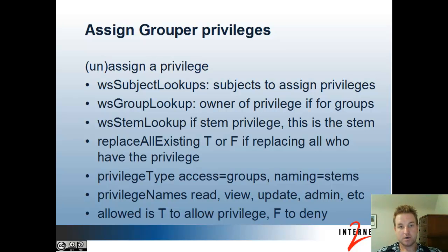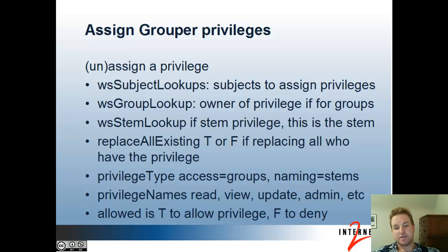Assign Grouper Privileges lets you assign or unassign a privilege. You pass in the subject lookups, the group lookup or stem lookup, the privilege type (access or naming), and the privilege names: read, view, update, admin, etc. If allowed is T it assigns the privilege; F removes it. If you pass in multiple things, you get multiple assignments — for instance, you could assign the same privilege to multiple subjects, or assign multiple privileges to the same subjects for a certain group, to batch them up.